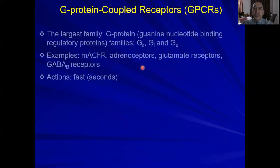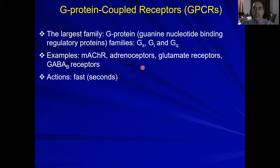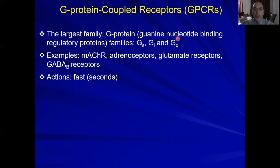The largest family of receptors is G-protein coupled receptors. These are receptors coupled to G-protein. They are called G-protein coupled because they bind guanine nucleotides — GDP (guanosine diphosphate) and GTP (guanosine triphosphate). These G-proteins come in families: Gs, Gi, and Gq, which we will discuss later.